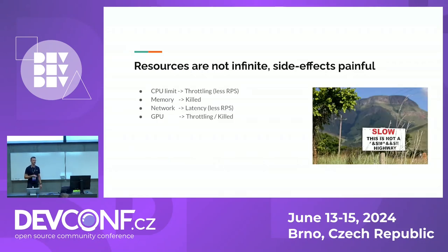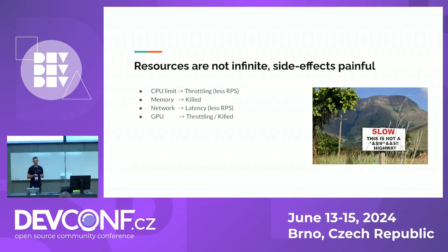Resources are not infinite and side effects are painful. For CPU limits you get throttling, which means fewer requests per second. For memory, your application will get killed. For network, you will get too much latency, or if there is network congestion, a different team's application may experience that latency while your team is just fine — which happened in one of the scenarios I'll talk about in a few minutes. For GPU, if it's GPU compute versus GPU memory, you will have different effects depending on what you run out of.